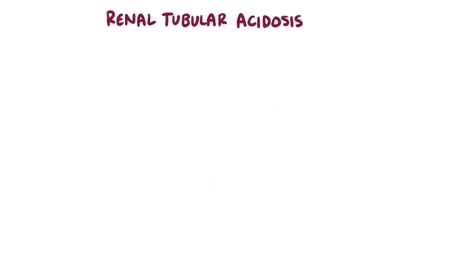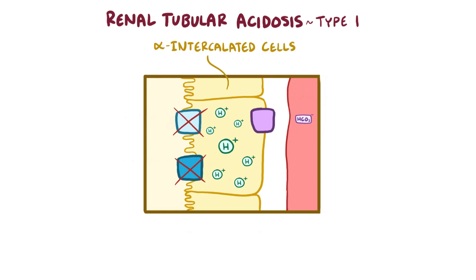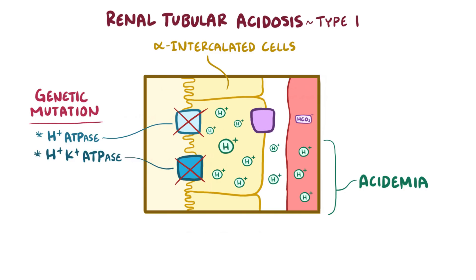In renal tubular acidosis type 1, or distal renal tubular acidosis, the main issue is that the alpha intercalated cells of the distal tubule and collecting duct are unable to secrete hydrogen. The buildup of hydrogen in those cells leads to a buildup of hydrogen in the blood, resulting in acidemia. The underlying cause could be a genetic mutation in the hydrogen ATPase pump or the hydrogen-potassium ATPase pumps of the alpha intercalated cells.